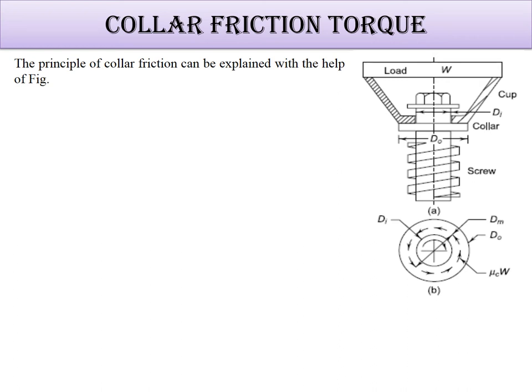The collar and load are shown here with the load acting on it. Di is the inner diameter of the screw and Do is the outer diameter of the collar. This is the inner diameter of the collar and this is the outer diameter of the collar.